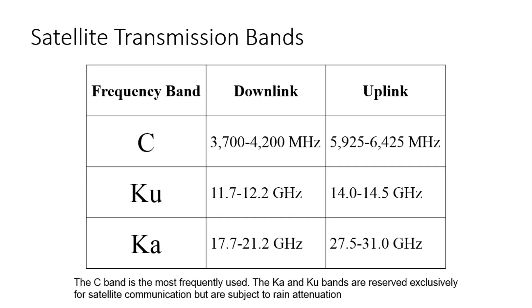Satellite transmission bands: There are different frequency bands with their downlink and uplink frequencies. The C band has a downlink of 3700–4200 MHz and an uplink of 5925–6425 MHz. The Ku band has a downlink of 11.7–12.2 GHz and an uplink of 14.0–14.5 GHz. The K band has a downlink of 17.7–21.2 GHz and an uplink of 27.5–31.0 GHz. The C band is the most frequently used. The K and Ku bands are reserved extensively for satellite communication but are subject to rain attenuation.